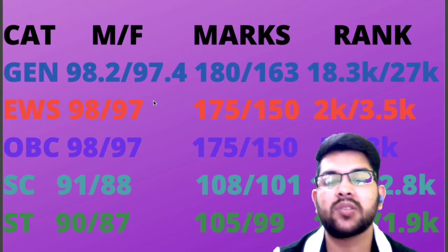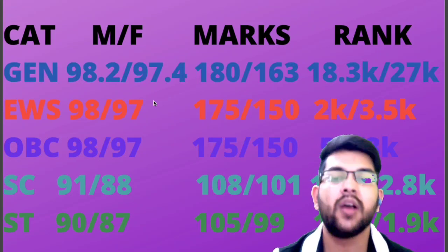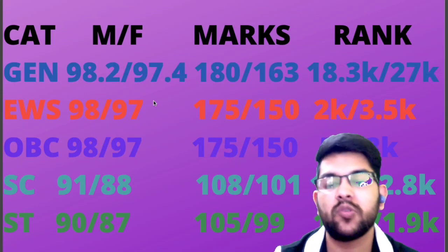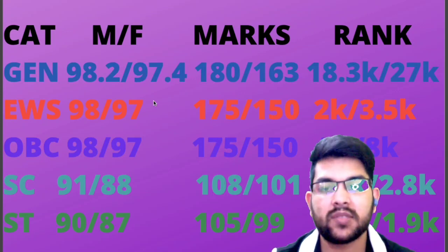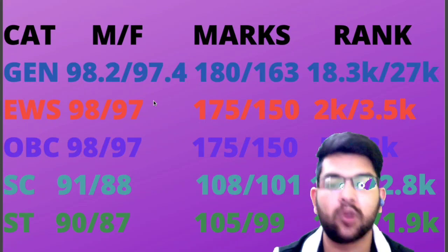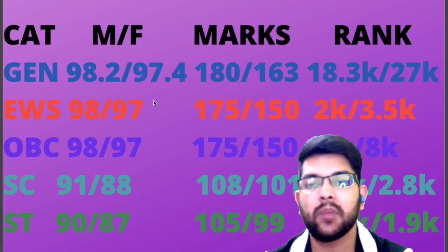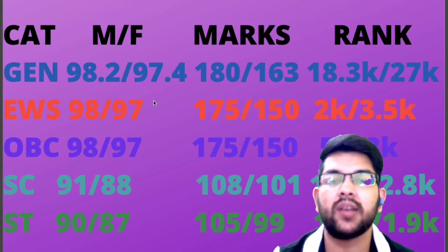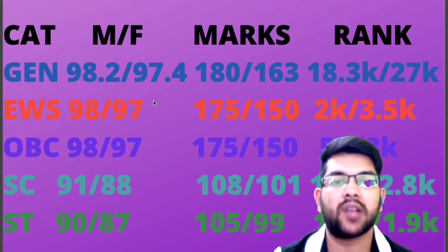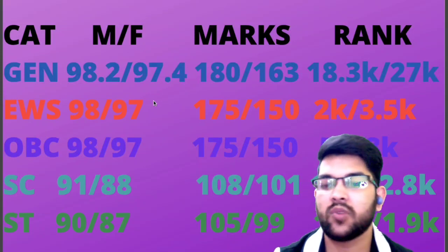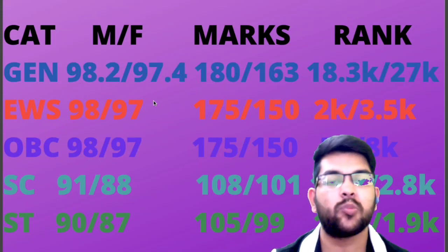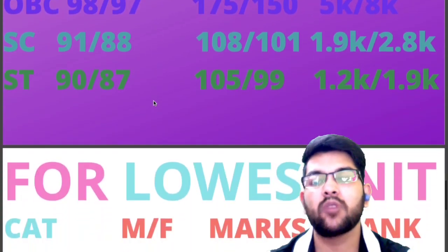For SC in top 20 NIT, percentile required is 91 and 88, marks will be 108 and 101. Again, the marks mentioned in this video are with reference to a moderate paper — if your paper is tough you can get the same percentile with less marks, and if it is very easy you may have to score a bit more. For complete reference on marks across easy, average, and tough papers, watch my previous video. SC category rank will be 1,900 and 2,800. For ST, percentile is 90 and 87, marks 105 and 99, and ST category rank 1,200 and 1,900.